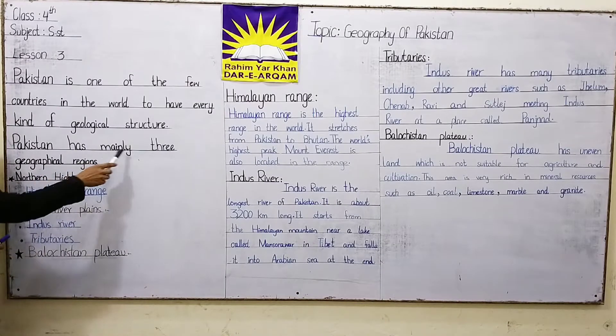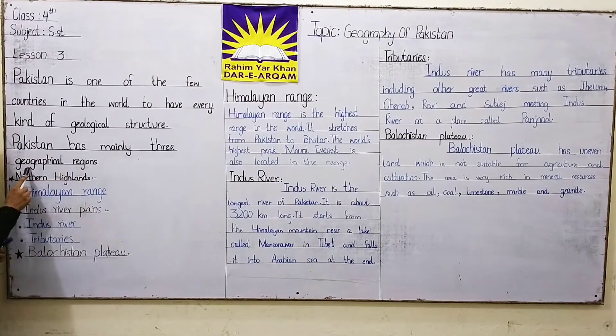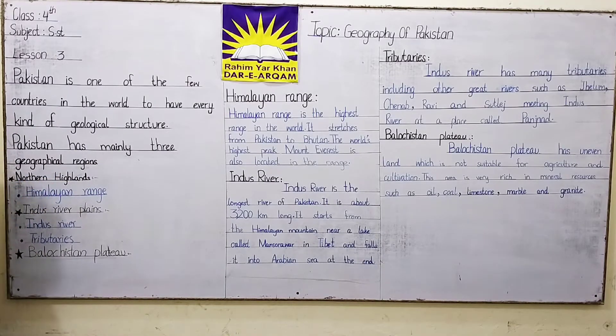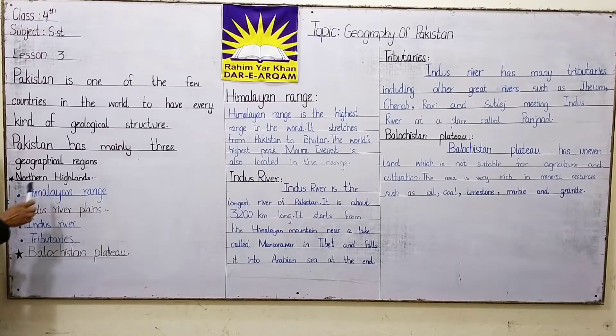Pakistan has three geographical regions. The first is Northern Highlands.